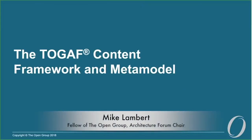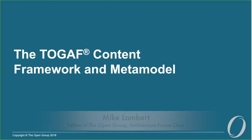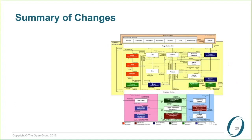The content framework and metamodel is a diagram that shows the things in your enterprise that you need to architect and the relationships between them that you need to be interested in.